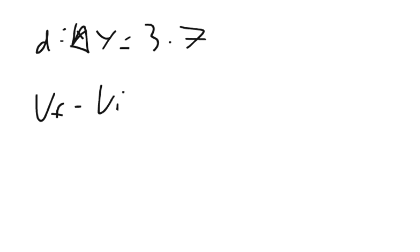We will know that our distance, our change in y, equals 3.7 meters. And so let's go ahead and write out some basic formulas. So if we know our final velocity minus our initial velocity divided by our time, that's our formula for acceleration. So the change in velocity over time is acceleration.